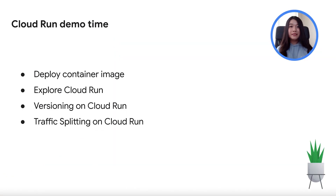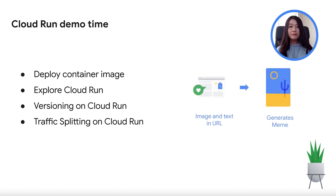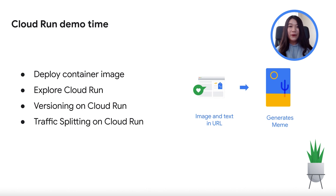It's about time to give you a tour — on to the demo! In this demonstration, we'll be creating a Cloud Run service with the use of a container image being built. We'll then explore versioning as well as traffic splitting. For today, we'll be making use of a sample application, which is a simple meme generator service. How it works is that it takes in an upper text, a bottom text, as well as an image in the URL bar in order to create a meme. You can follow along with your own application or make use of a sample one in the description box below.